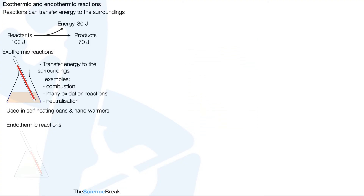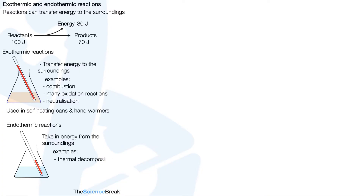Endothermic reactions — we would detect a temperature drop because these reactions take in energy from the surroundings. Examples include thermal decomposition, and a very specific example is the reaction of citric acid with sodium hydrogen carbonate. These types of reactions are often used in sports injury packs, for example, to reduce or stop swelling of an injury.